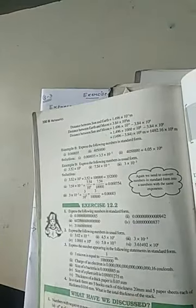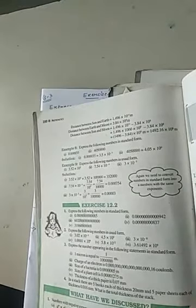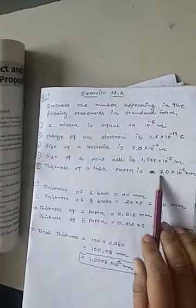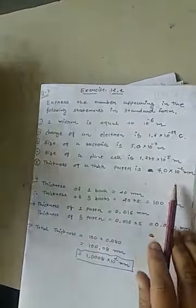Next is thickness of the paper 0.07 mm. Point will come after the 7. So, 7.0 and it shifts 2 steps. That is why power will be minus 2. 7.0 into 10 raised to minus 2.